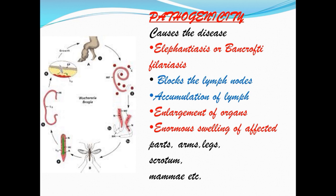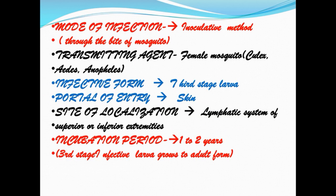Mode of infection is the inoculative method through the bite of the mosquito. Transmitting agents are female mosquitoes: Culex, Aedes, and Anopheles. The infective form is the third stage larva. Portal of entry is the skin. Site of localization is the lymphatic system. Incubation period is 1 to 2 years, during which the third stage infected larva grows to the adult form.